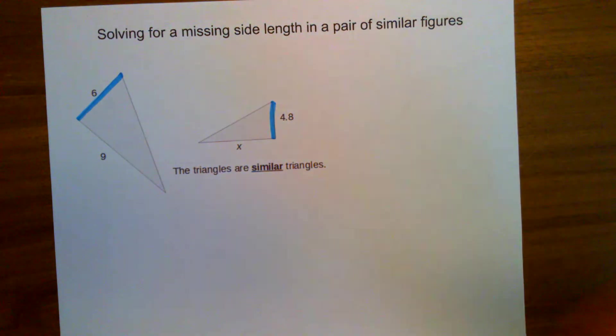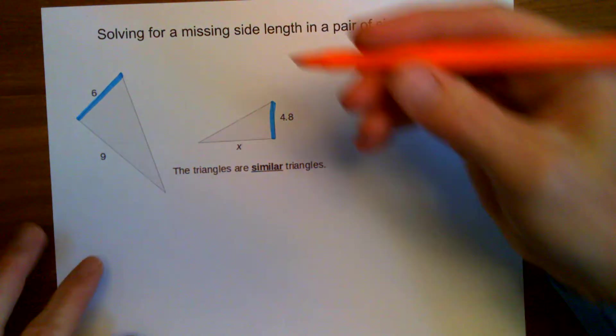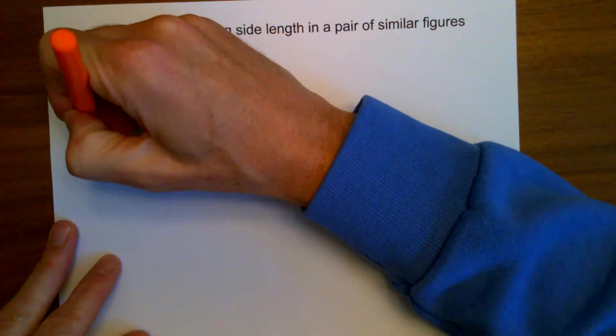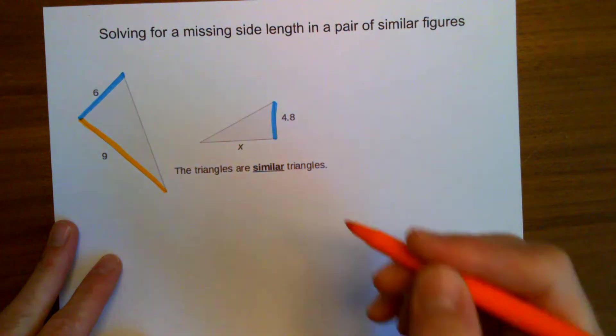Then, it looks like this side length that's a 9 over on this larger triangle, that would be the medium size length of that triangle.